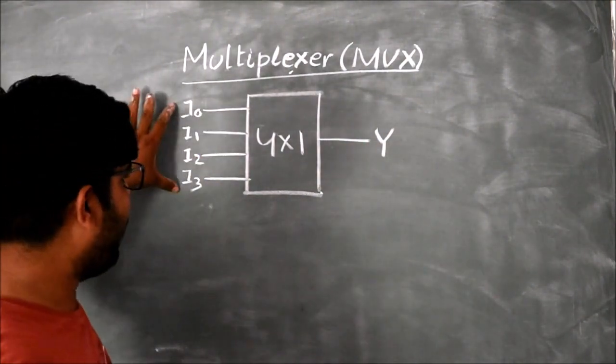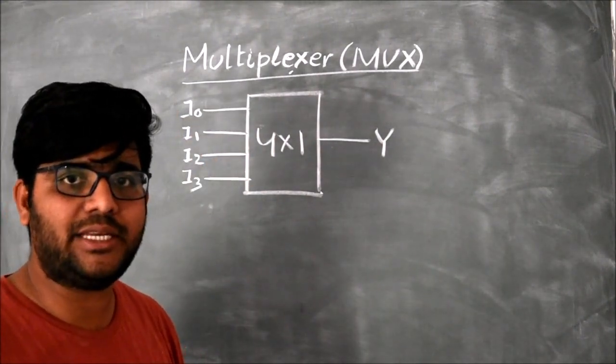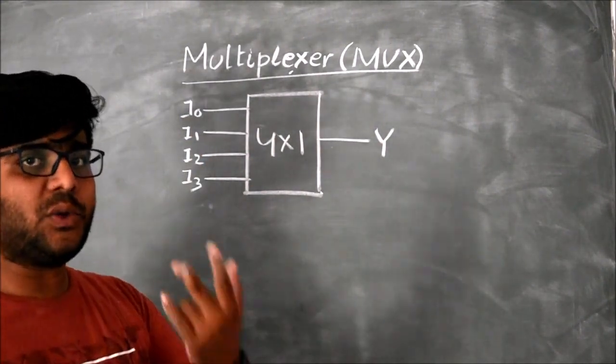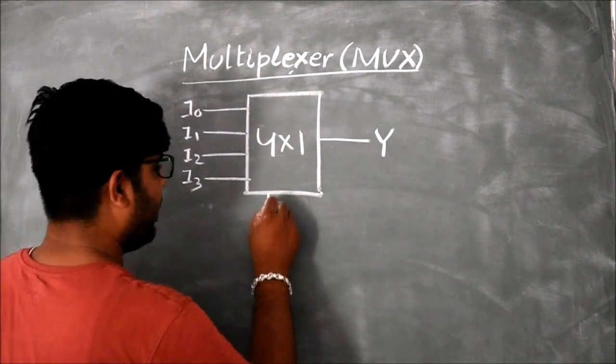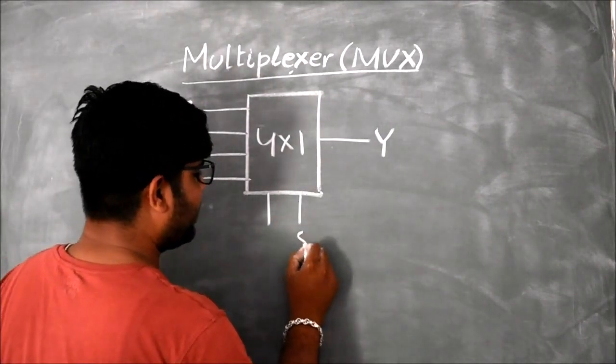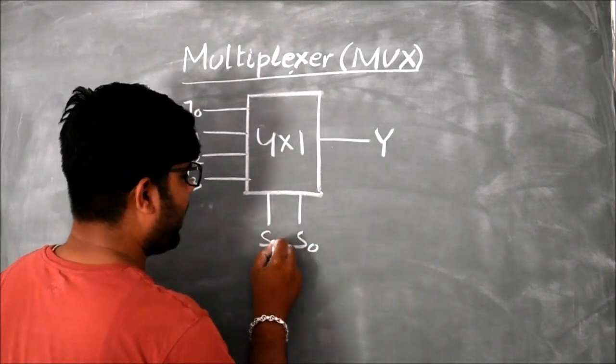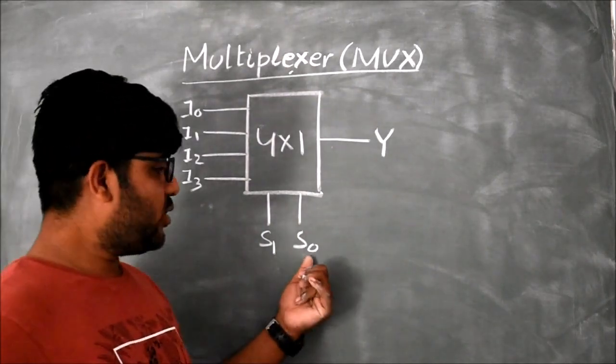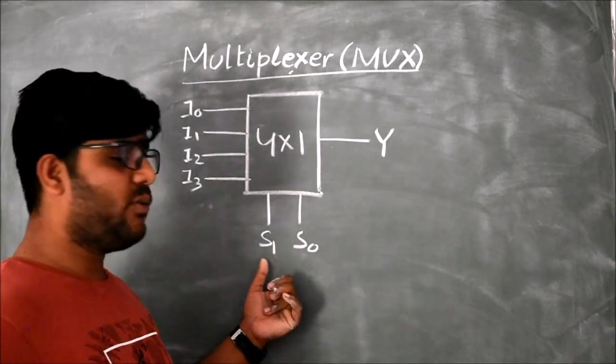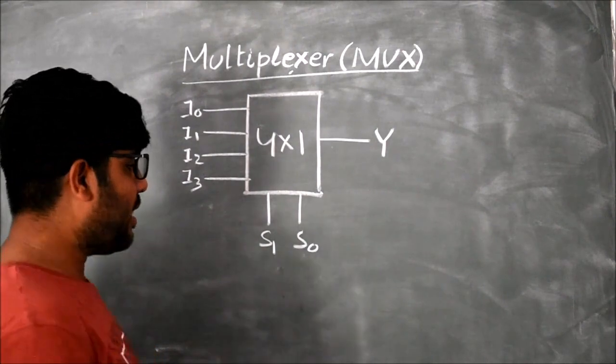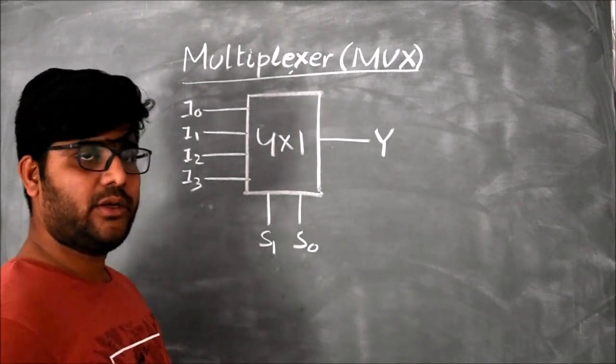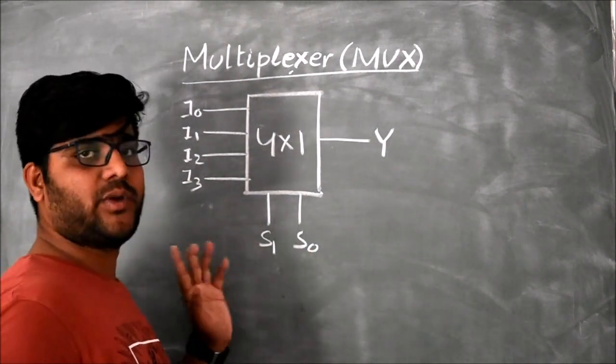Then for 4 inputs, how many selection lines should I need? I need 2 selection lines, those are S0 and S1. Remember, 0 should be LSB and 1 should be MSB. You should write S0 and S1, not S1 and S0.